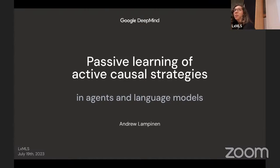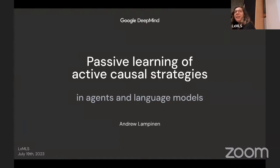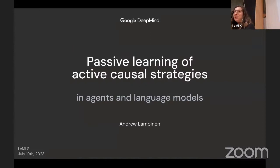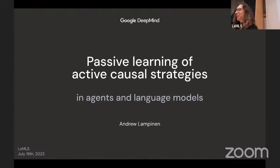We'll start the evening lecture. Thank you Andrew for coming today. We have Andrew Lampinen, a senior research scientist at DeepMind. Prior to that he did his PhD at Stanford in cognitive psychology, and he has really interesting work on how language, memory, and embodiment can make more general and more flexible models. Really interested in hearing more about this work.